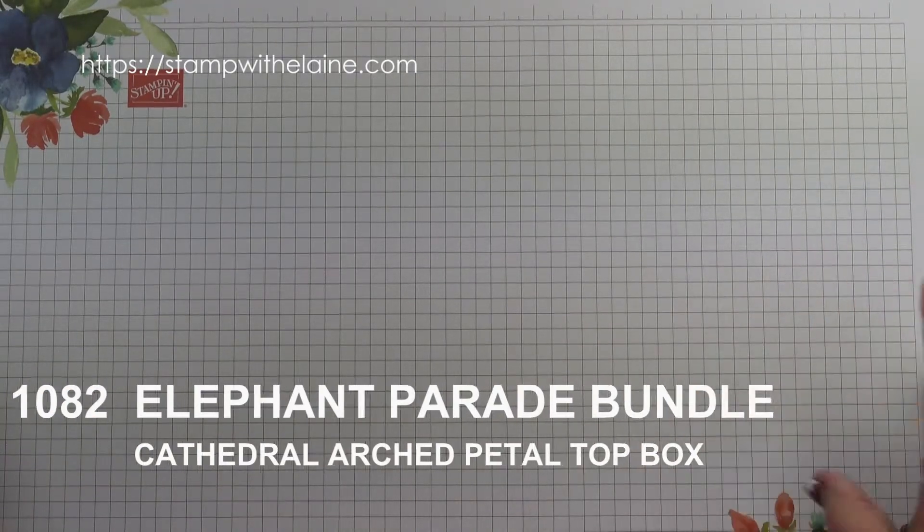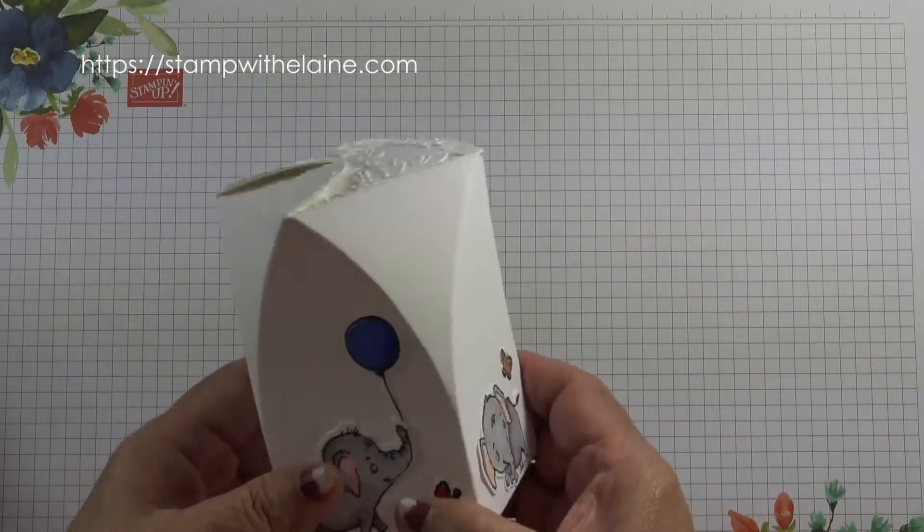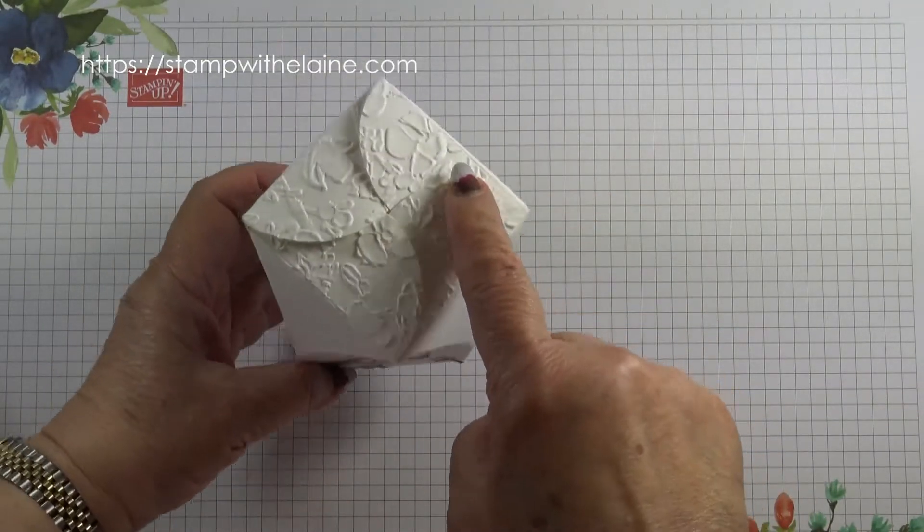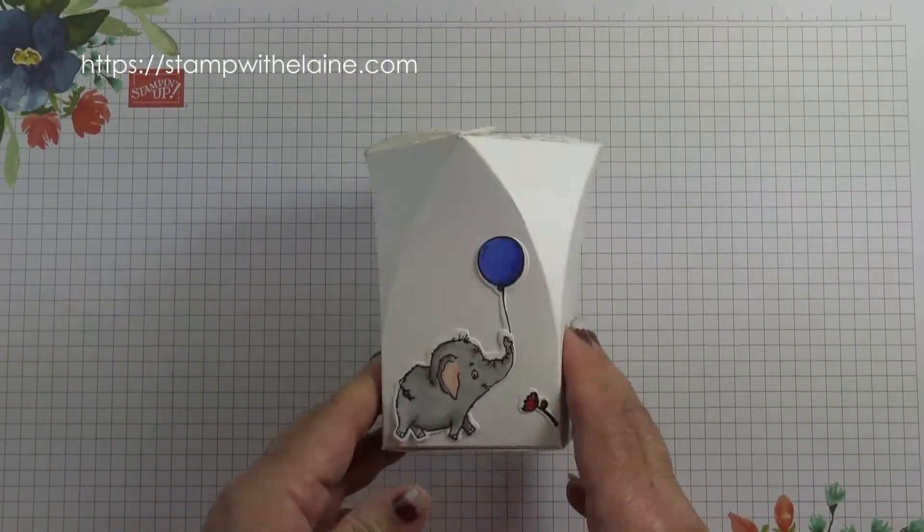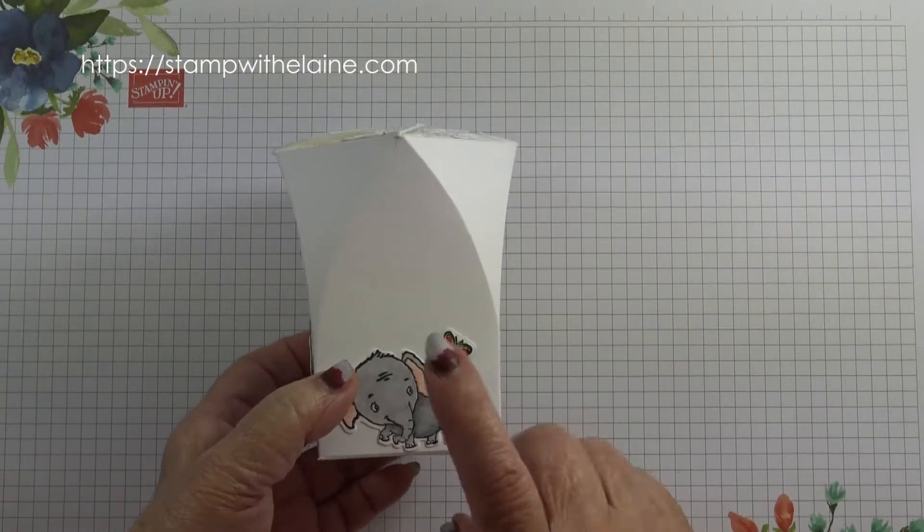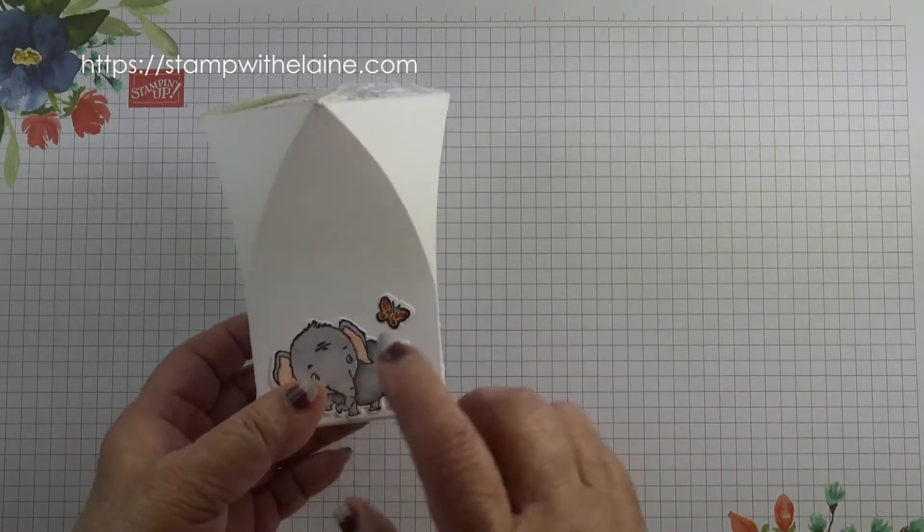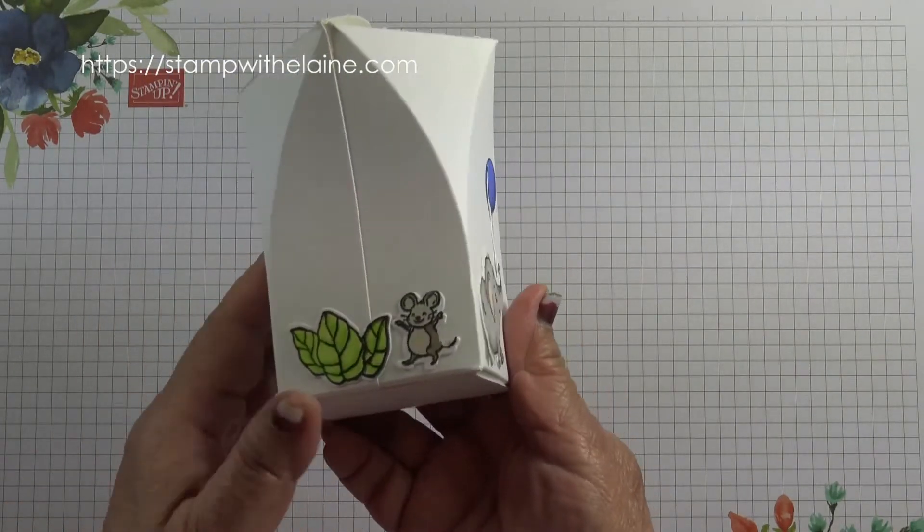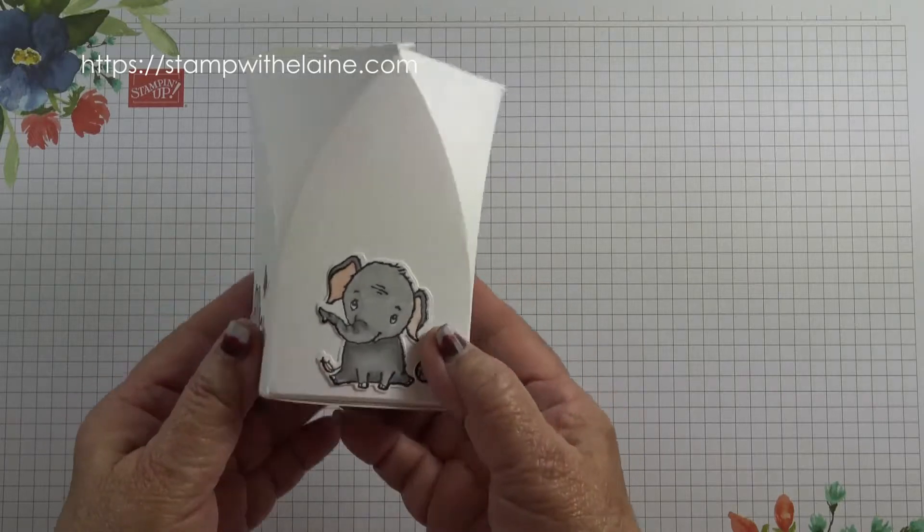Now I love playing around with shapes, and today's box has a cathedral arch with a petal top closure. I've made this box out of basic white thick cardstock and stamped my images on basic white and colored them all in with Stamping Blends alcohol markers.